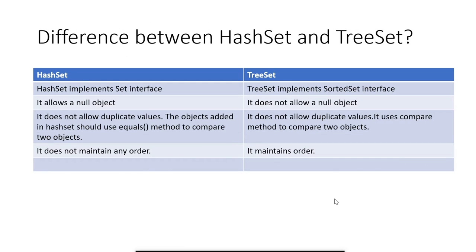What is the difference between HashSet and TreeSet? HashSet implements the Set interface while TreeSet implements the SortedSet interface. HashSet does not allow null objects while TreeSet does not allow null objects either. HashSet does not allow duplicate values; the objects added in HashSet should override the equals and hashCode methods. TreeSet does not allow duplicate values and uses the compare method to compare two objects. HashSet does not maintain any insertion order while TreeSet maintains sorted insertion order.